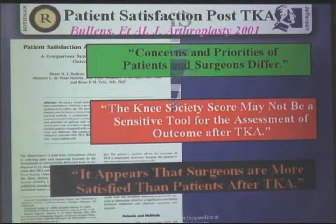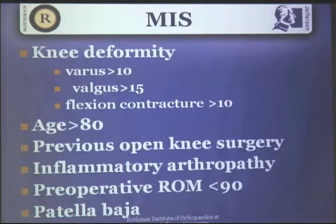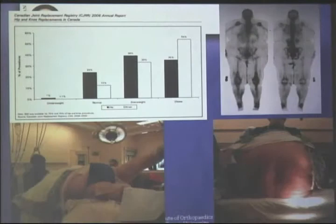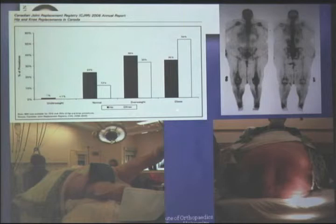In my opinion, MIS is not appropriate for patients with severe deformities, elderly people, patients who've had previous open knee surgery with scarring tissues, or patients with inflammatory arthropathy. Considering these are the types of patients I operate on daily, and based on the Canadian registry, the majority of our patients will be at least overweight to obese — approximately 50 percent of knee replacement patients in the United States alone are overweight or obese. It's arguable that MIS in this patient group will not work.